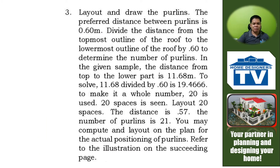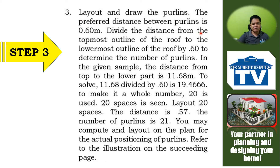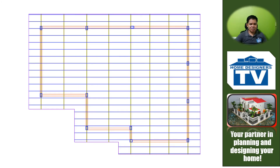Step number three: you are going to lay out and draw the purlins, considering the guidelines stated in your supplementary learning materials. On step three you're going to draw these blue lines representing your purlins — the blue lines being pointed by the laser are the purlins, which measure 0.57 apart from each other.